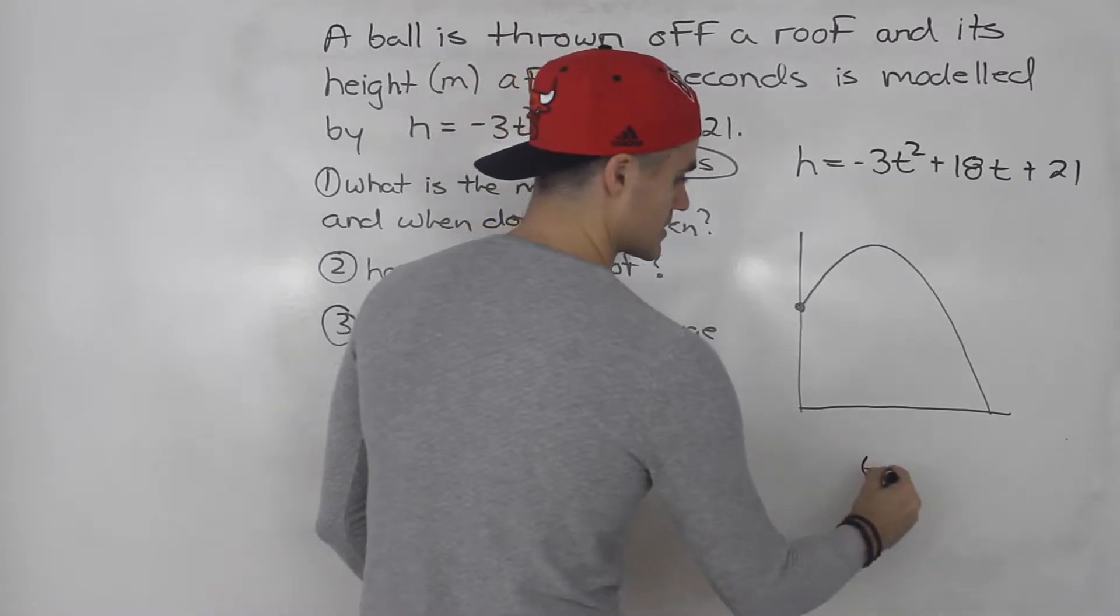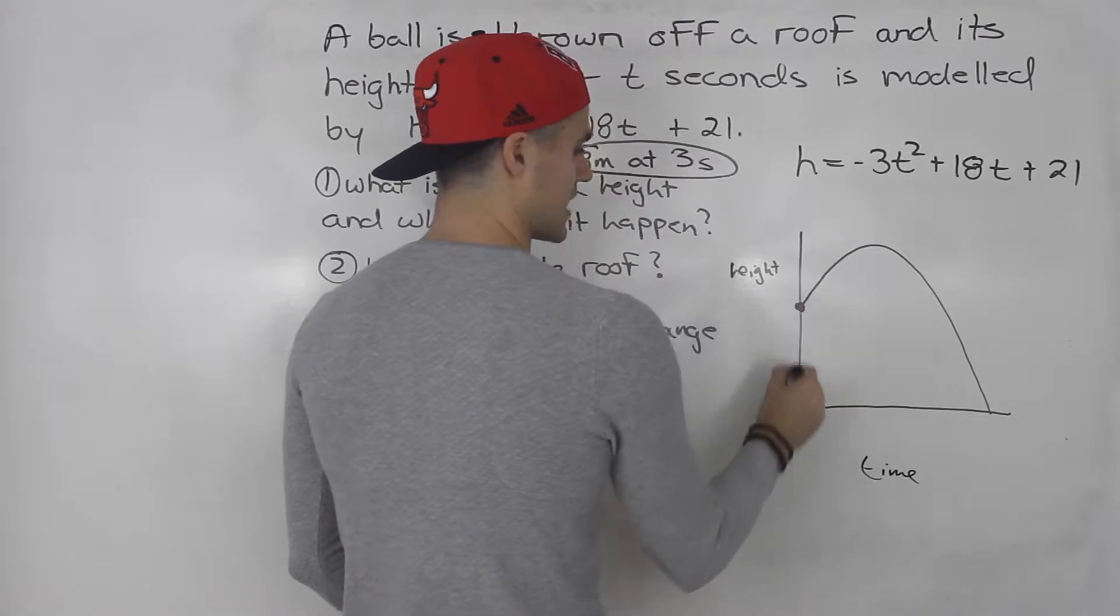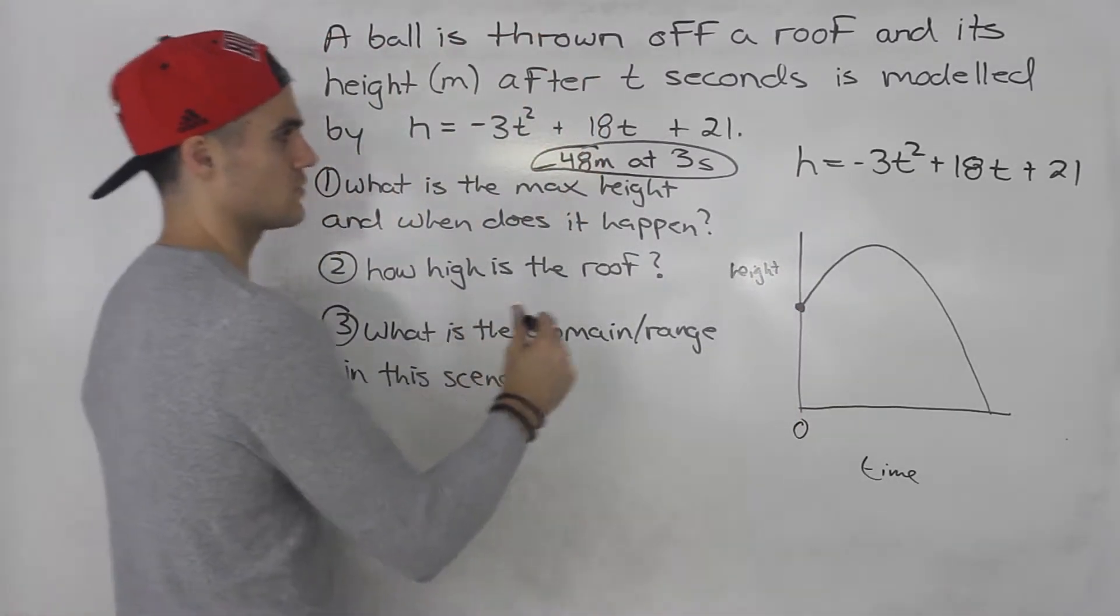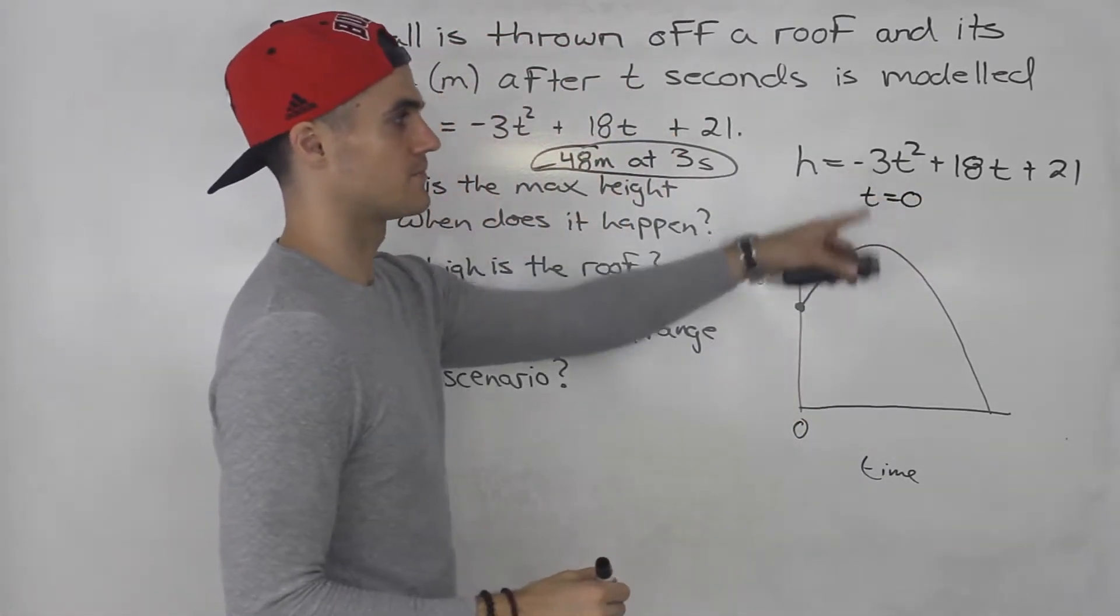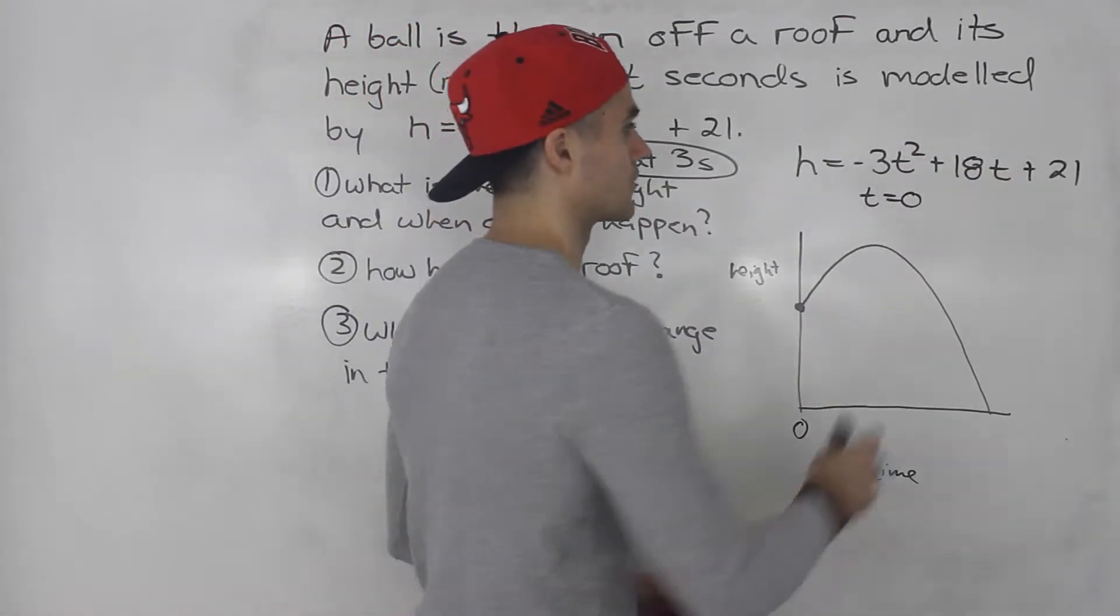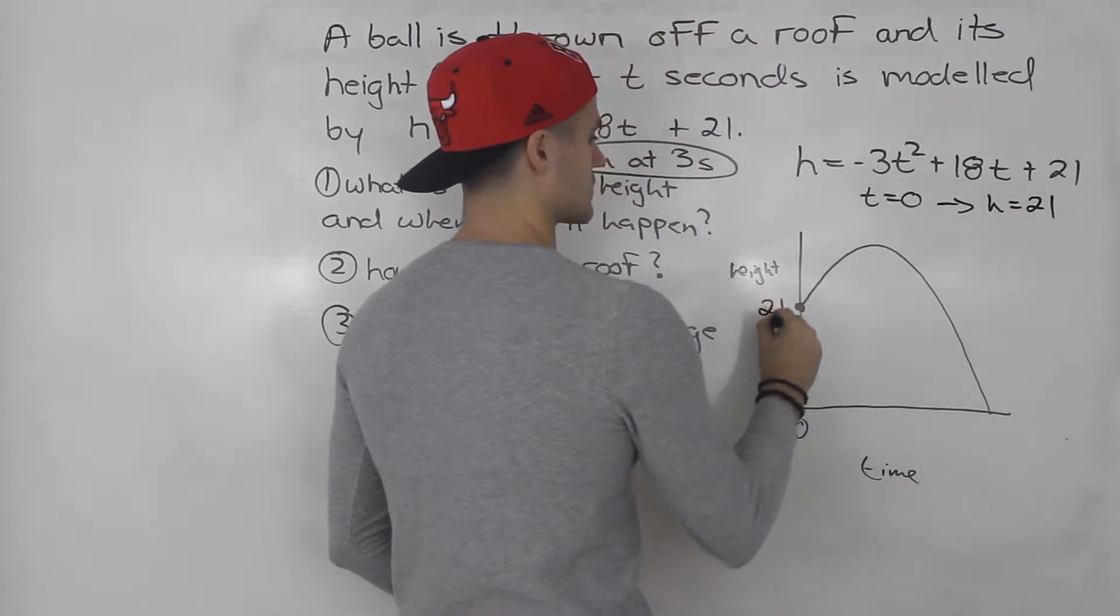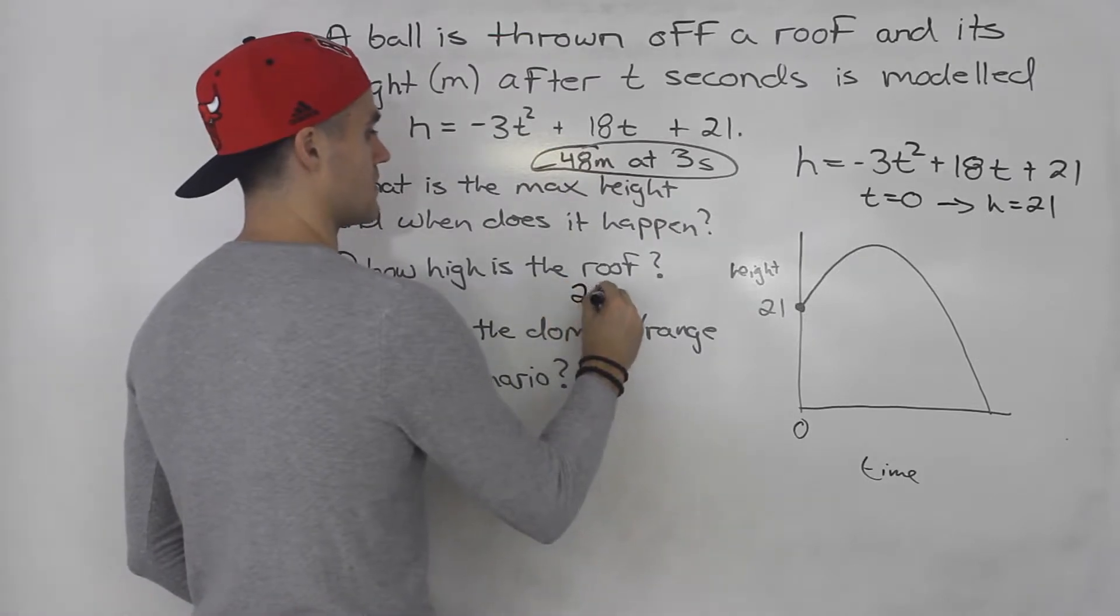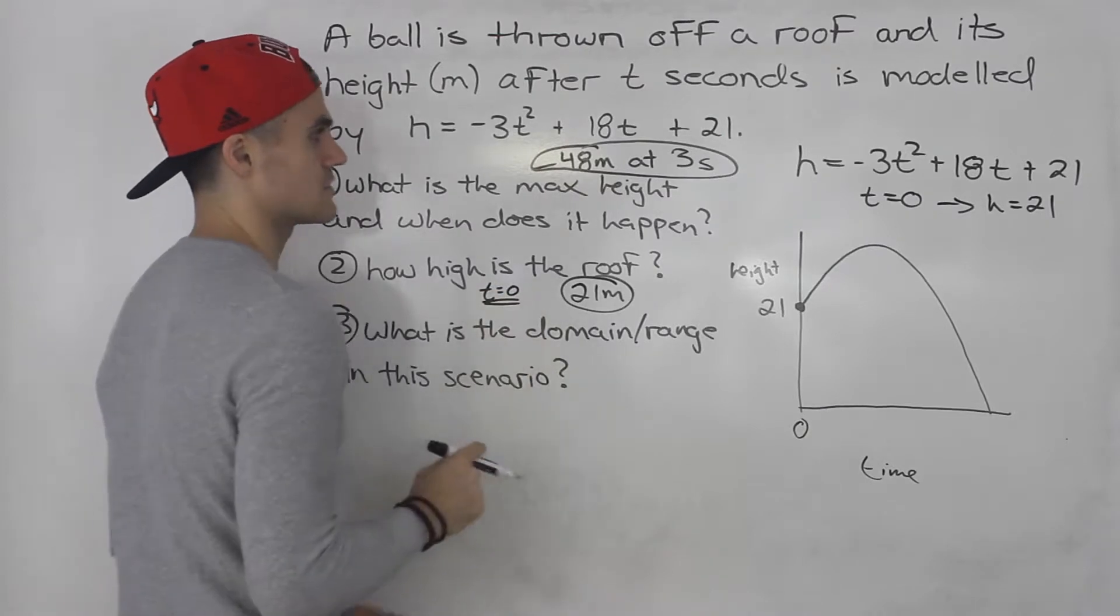So how do we find this here? Well, notice this is time. This is height. What's the time here? The time is zero. So how high is the roof? The way you find that is you plug in t equals zero into the function. And when we do that, notice we'll just get 21 right there. So that's the answer for number two. The roof is 21 meters high.